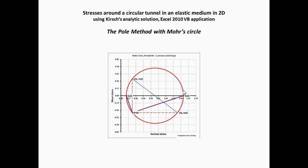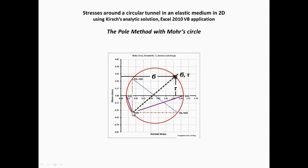The pole is a special point on Mohr's circle. Any straight line drawn from the pole intersects Mohr's circle at a point which gives the stress state sigma, tau acting at the plane inclined parallel to that line. The following introduction explains how to find Mohr's circle, the pole, and the stresses acting at arbitrarily oriented planes.